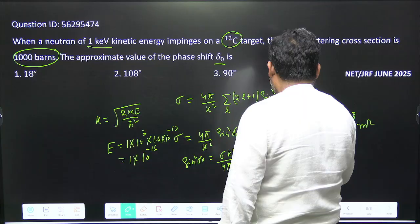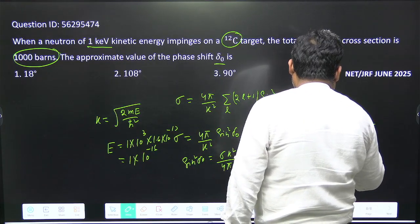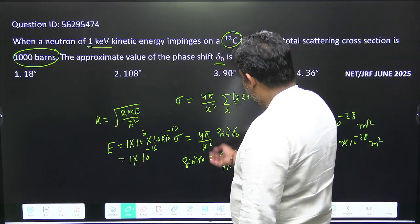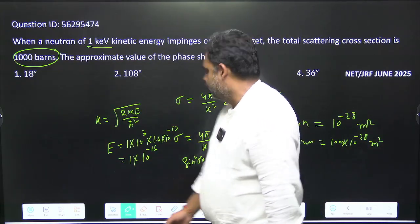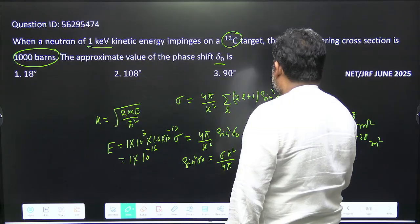So you can put 1000 barns = 1000×10⁻²⁸ meter square. When we put all these values and put the mass of neutron here, then we can easily get δ₀ is approximately 38 degrees.